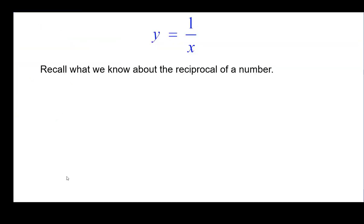So let's first recall what we know about the reciprocal of a number. When x is equal to 1 half, 1 over 1 half, which is the reciprocal of 1 half, is equal to 2.